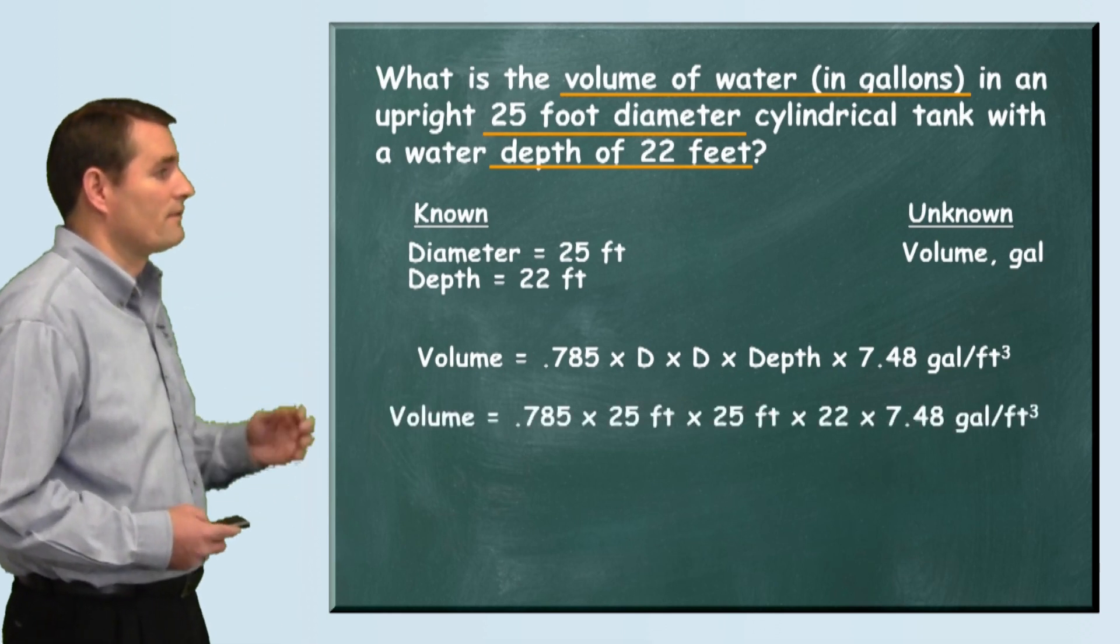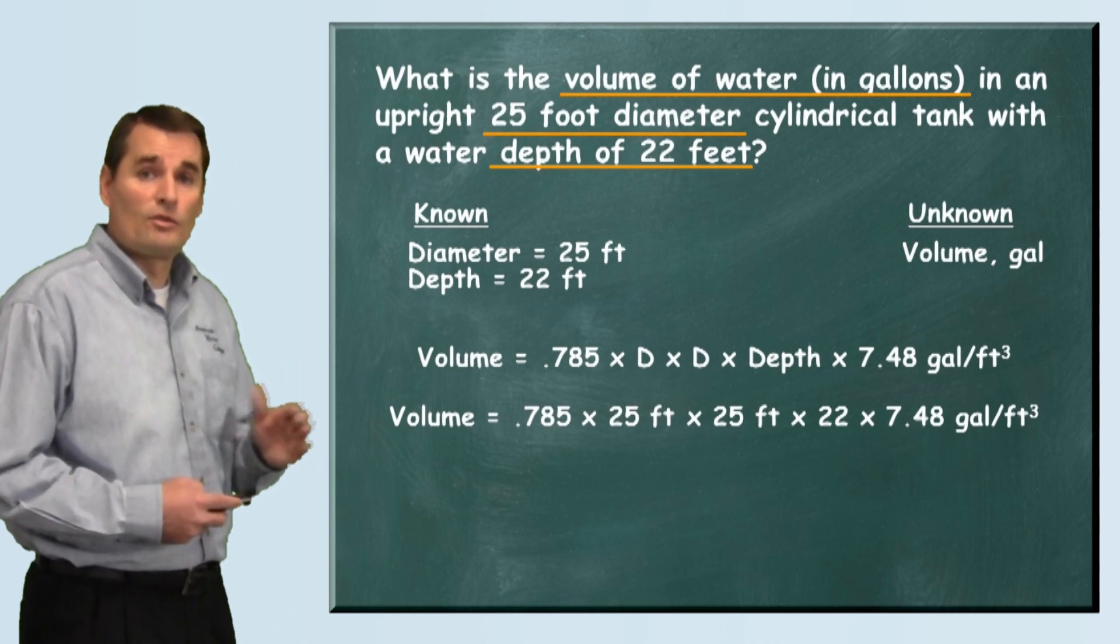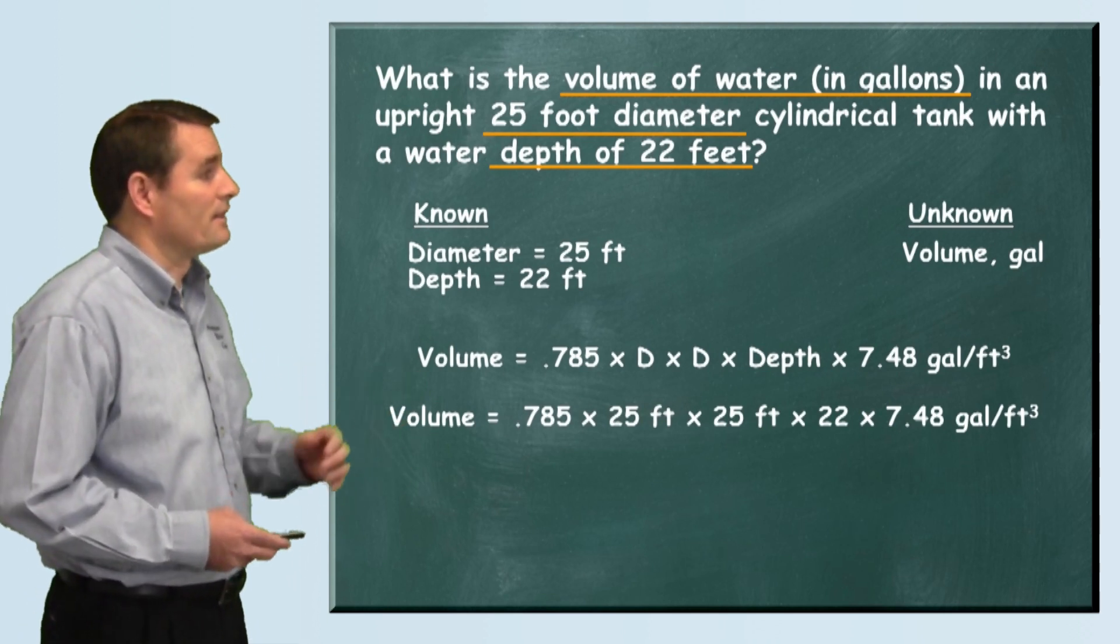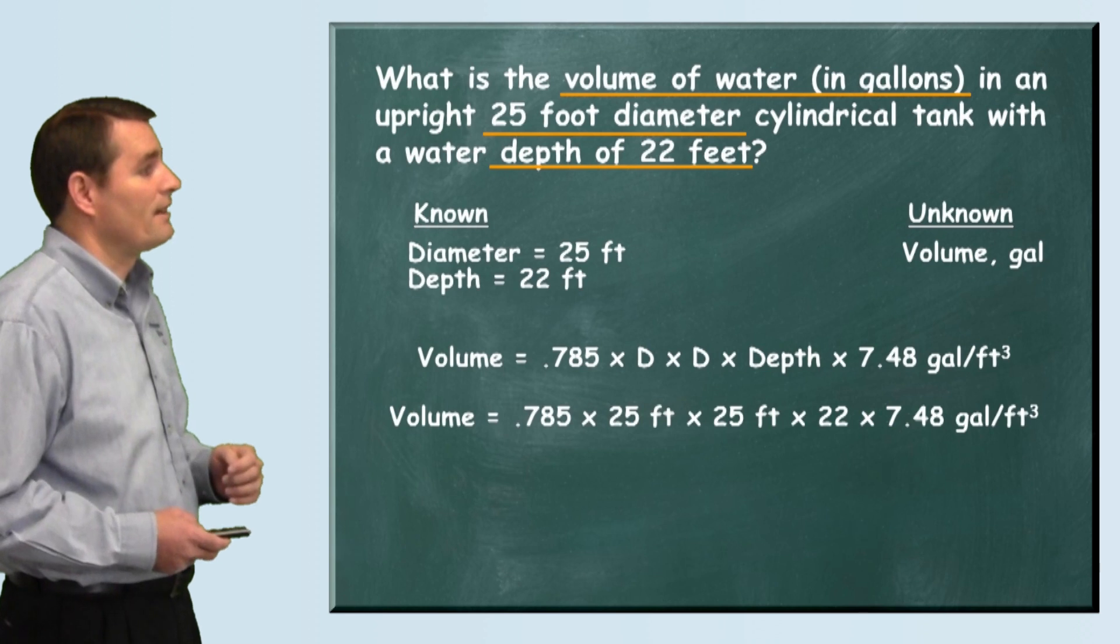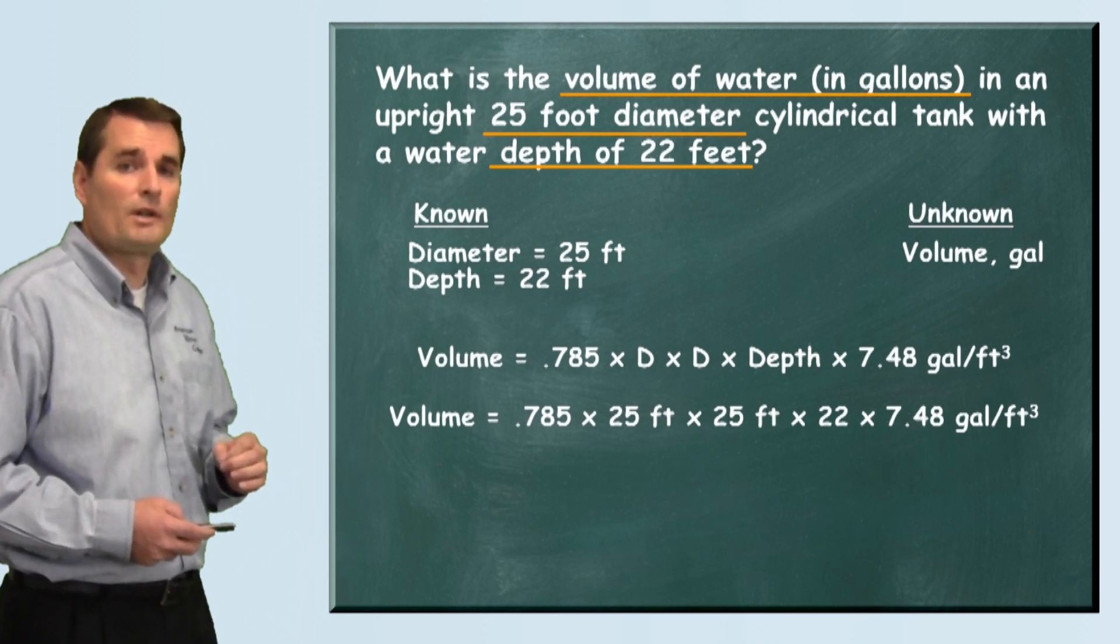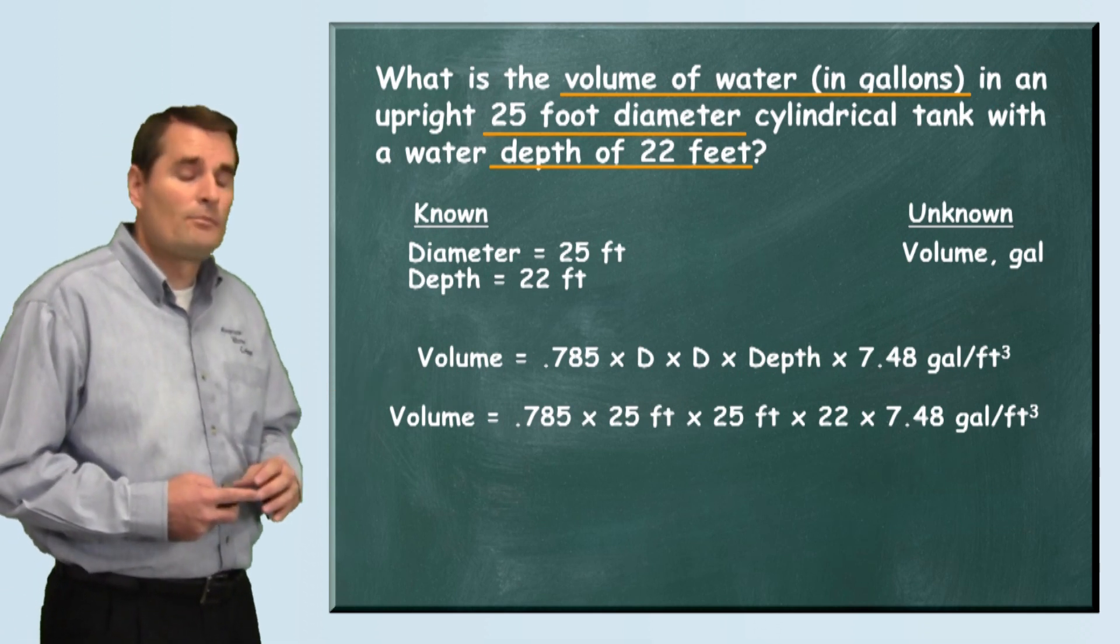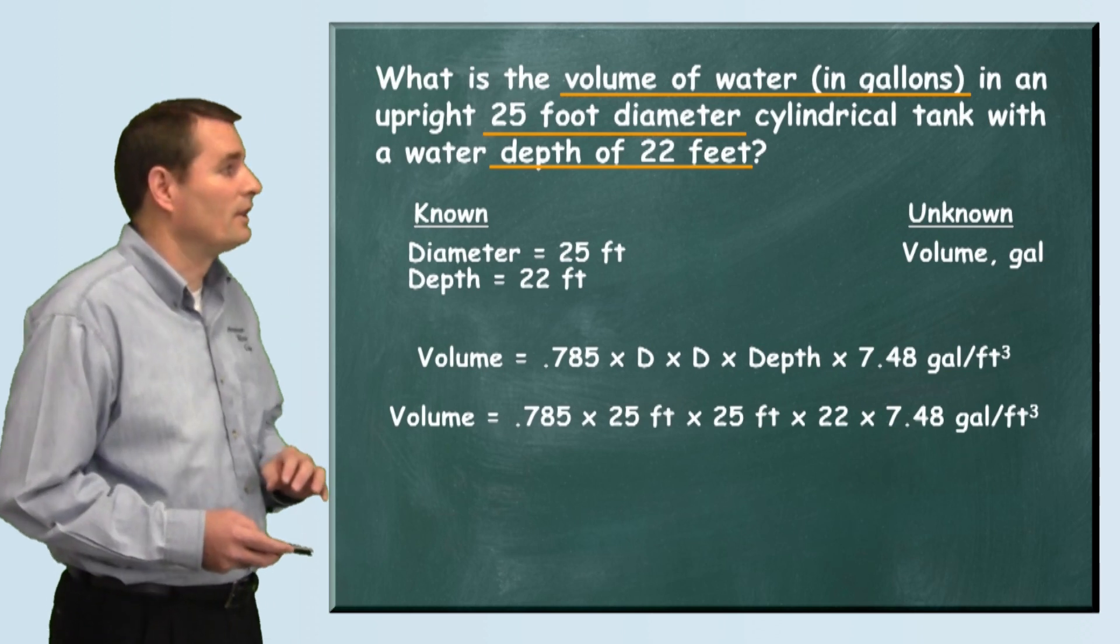We'll plug in our numbers: 0.785 times the diameter of 25 feet times the diameter of 25 feet times the depth of 22 feet times our unit conversion of 7.48 gallons per cubic foot.